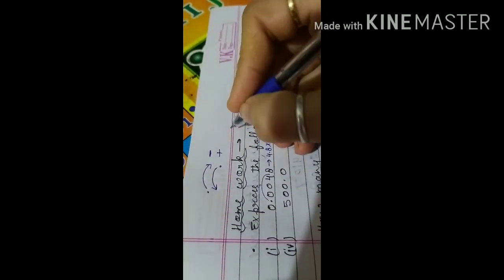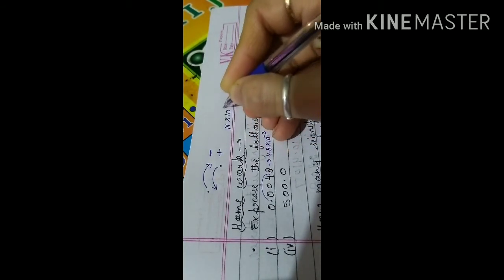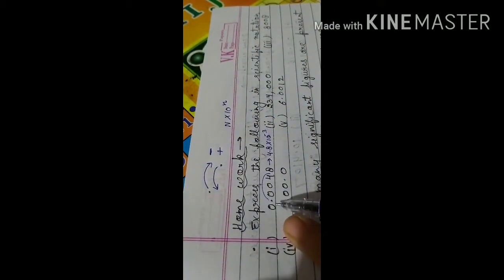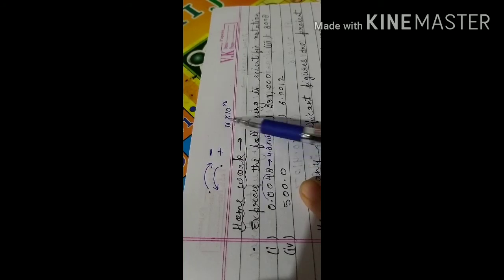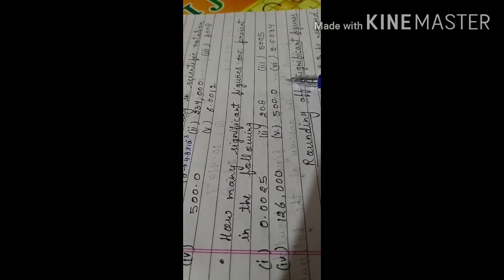Scientific notation means writing any number in the form of N × 10ⁿ. For 0.0048, after transferring the decimal, it becomes 4.8 × 10⁻³. Always remember the decimal should be placed after one digit. The second question asks: how many significant figures are present in the following numbers? Apply the rules I have discussed — you have to solve both questions properly.